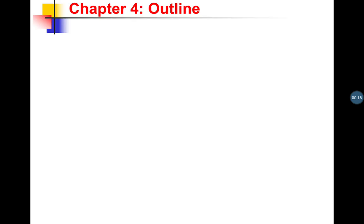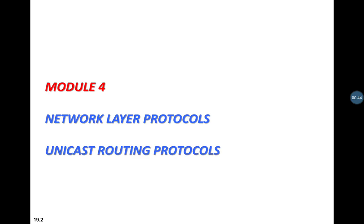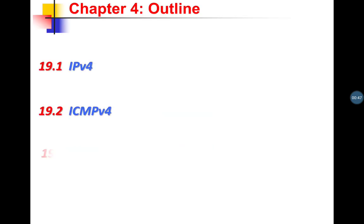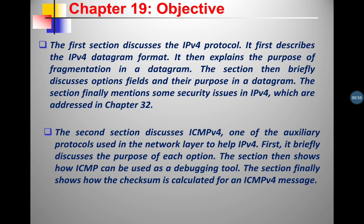Hello everyone. We will be starting with Module 4, which comprises network layer protocols and unicast routing protocols. First, we will study IPv4 (Internet Protocol version 4), then ICMPv4 (Internet Control Message Protocol), followed by Mobile IP. In the unicast routing protocols section, we will study the distance vector algorithm, link state algorithm, and path vector routing.